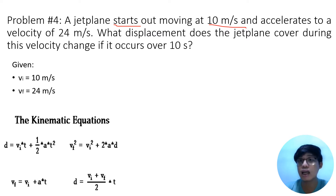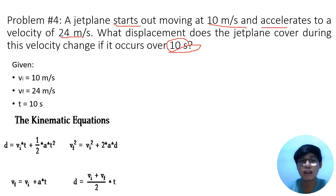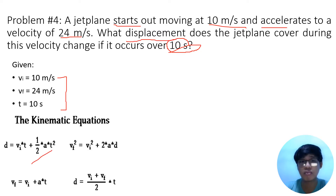Next, we have the final velocity. After the 10 meters per second, it accelerated to 24 meters per second. That is the last velocity mentioned after the initial 10 meters per second, so that is the final velocity we will consider in this problem. And then for time, it obviously covers a period of 10 seconds. Now, displacement is what we are looking for.